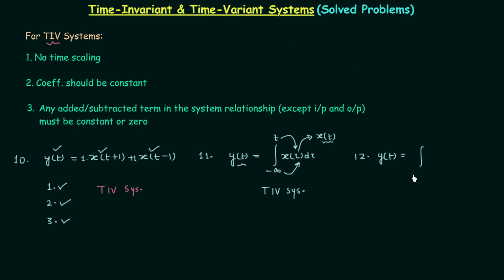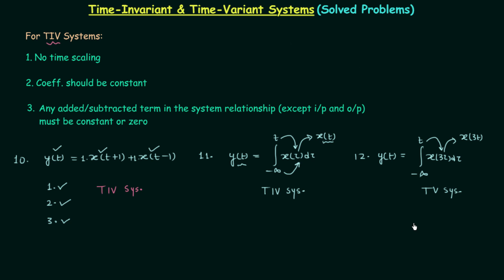Now let's solve the 12th problem. Here the output y(t) is equal to the integration from minus infinity to 3t of x(τ) dτ. We repeat the same process and put the upper limit in place of τ, giving us x(3t). Now let's check the first condition — there should be no time scaling. But here there is time scaling, as 3 is multiplied to t, which is the case of time scaling. So the first condition is violated, and because of this the system is a time variant system. You cannot generalize integration for time invariant and time variant systems — it depends on the upper and lower limits and the function being integrated.